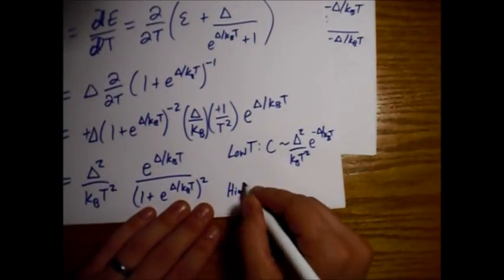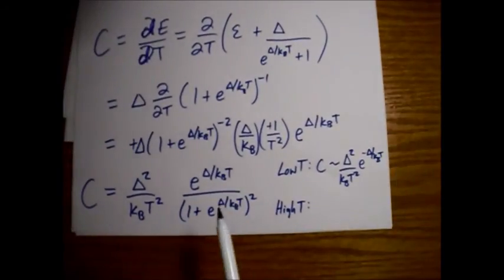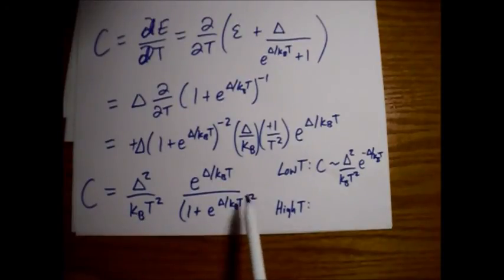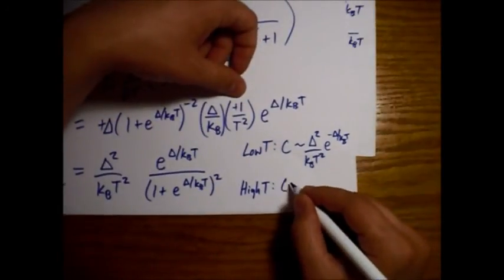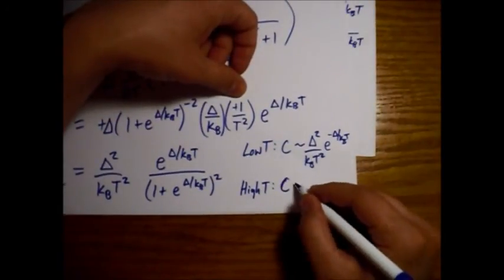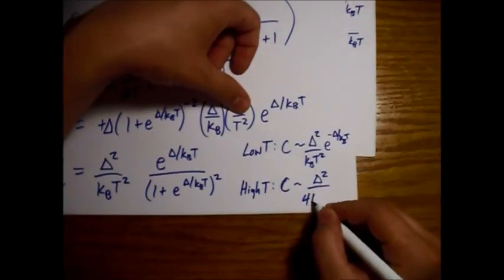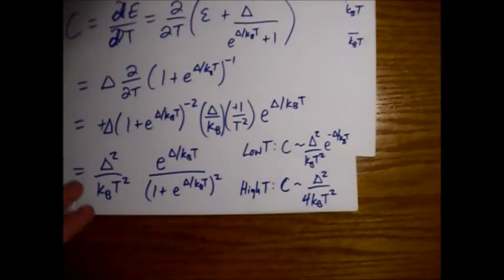So high T. High temperature limit. These guys are going to one. So we have a one over a one plus one squared. So a two squared. So a four. So one fourth. C will be going as delta squared over four kB T squared.